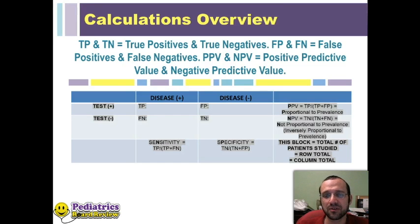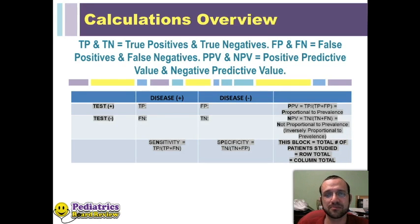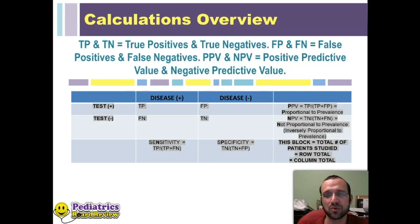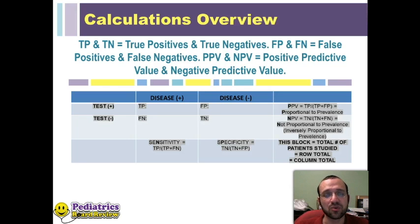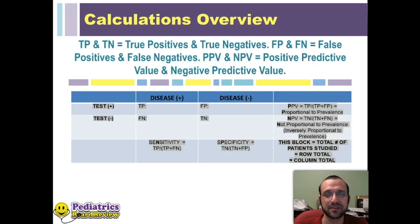The important thing to know is that when the boards ask you for any of those ultimate calculations — the positive or negative predictive values, the sensitivity or the specificity — you need only one of these rows or one of these columns to calculate those values. For example, for sensitivity, you need only column two — your true positives and false negatives.